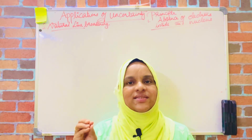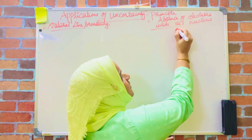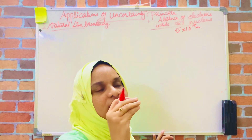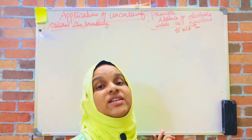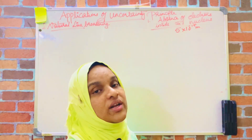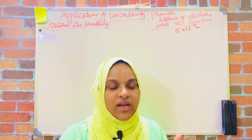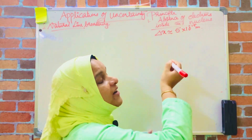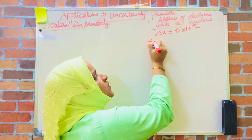For that, consider a nucleus. The radius of a nucleus is of the order of 5 Fermi, or 5 into 10 raised to minus 15 meters. So if the electron was inside the nucleus, its position should be within this limit. Therefore, the uncertainty in position should also be of the same order — approximately 5 into 10 raised to minus 15 meters.